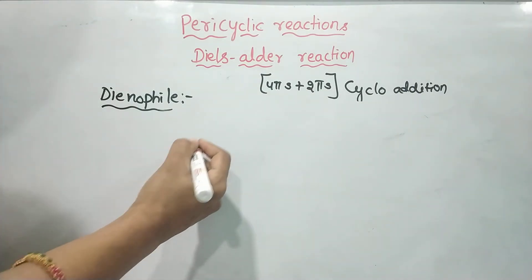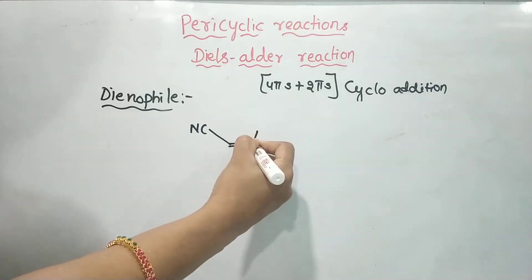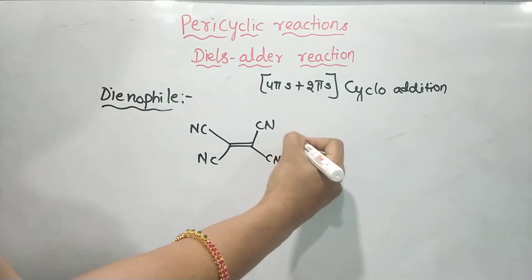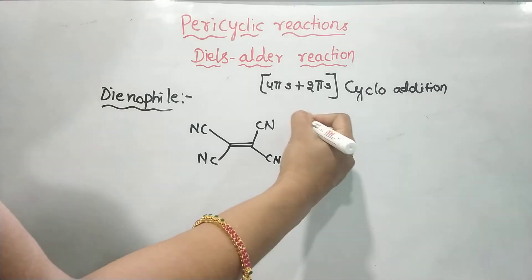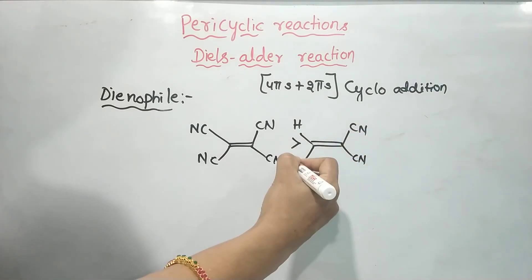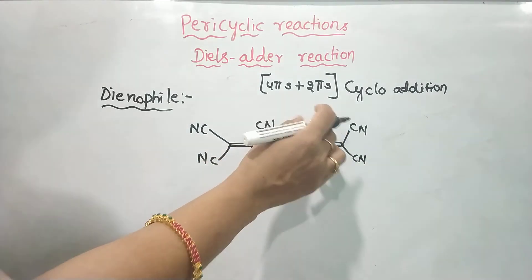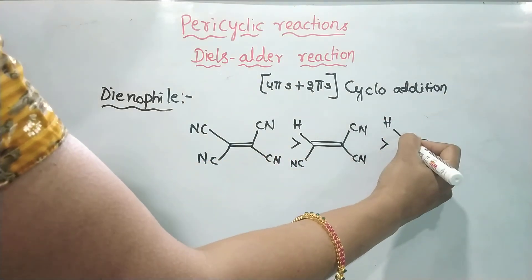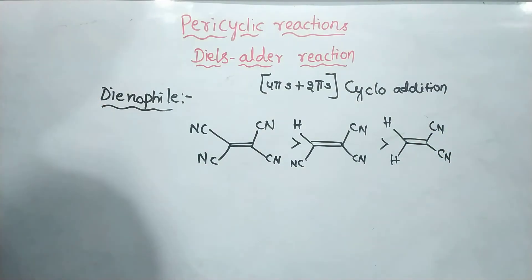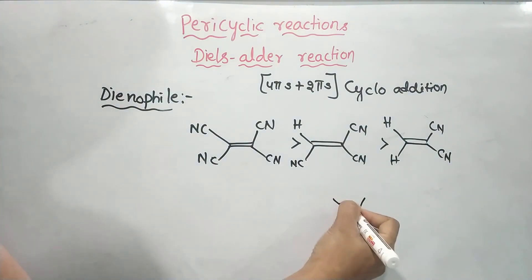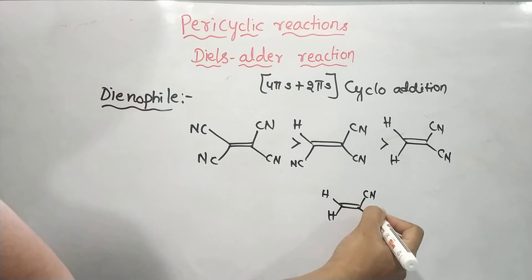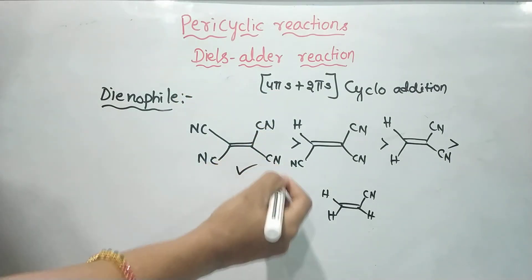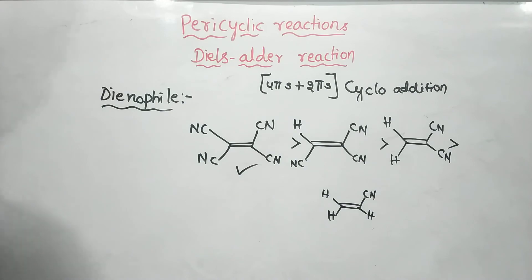We will find the electron withdrawing groups. For example, these could be CN, CHO, and similar groups. There is more reactivity because of these groups. Adding CN makes this more reactive compared to without it. This is the reactivity order of electron withdrawing groups — more reactive compared to less substituted dienophile. This is the dienophile.